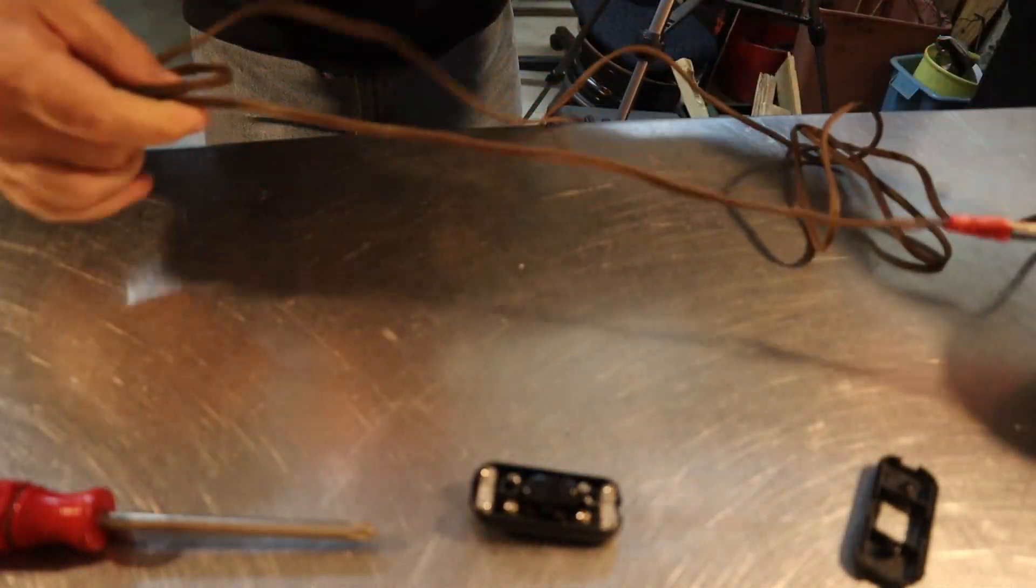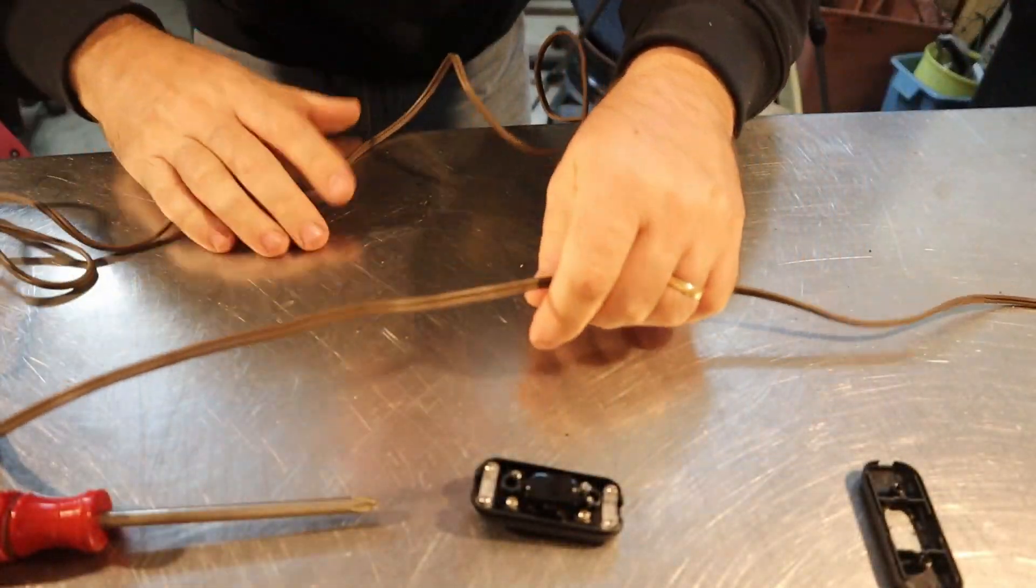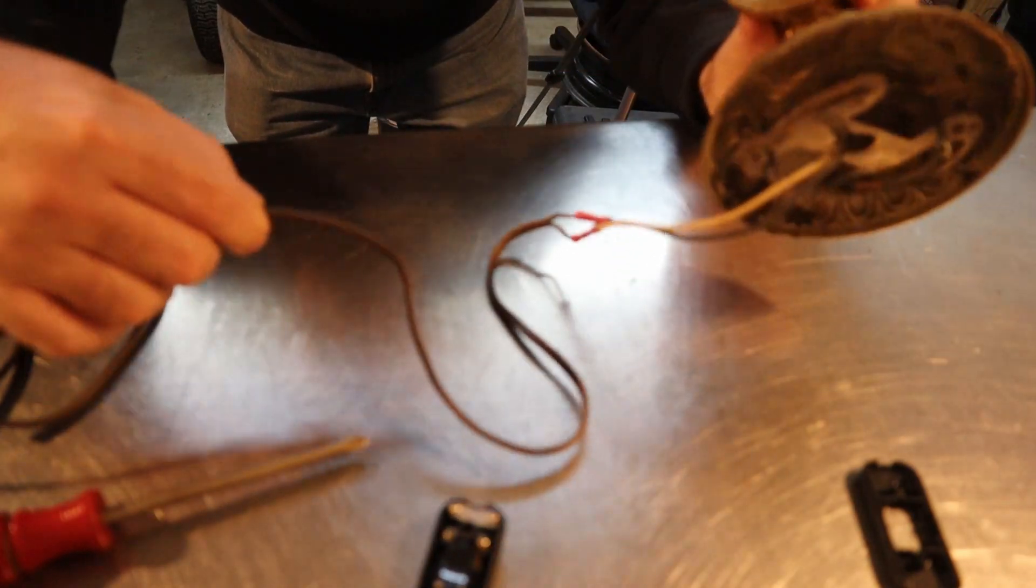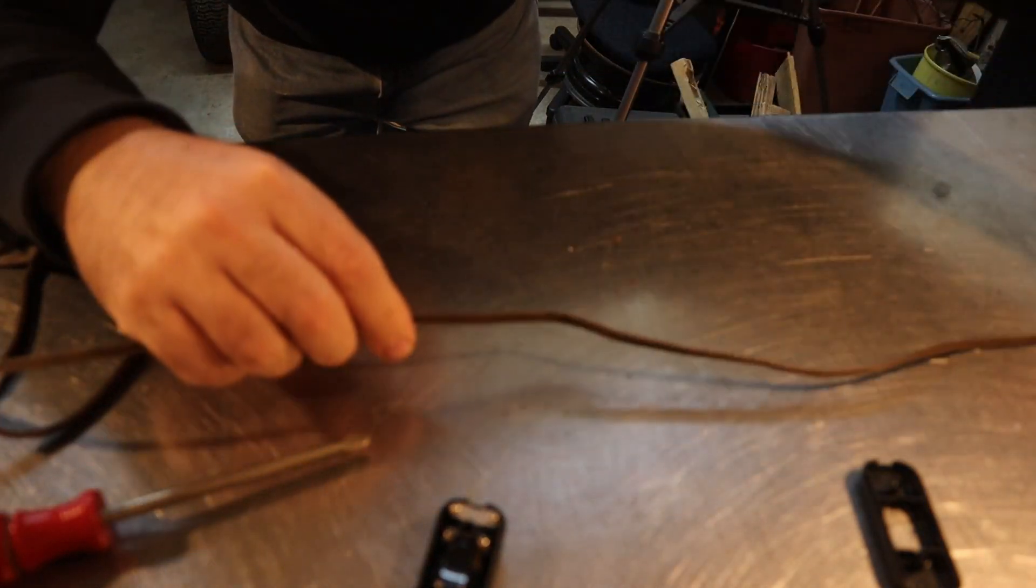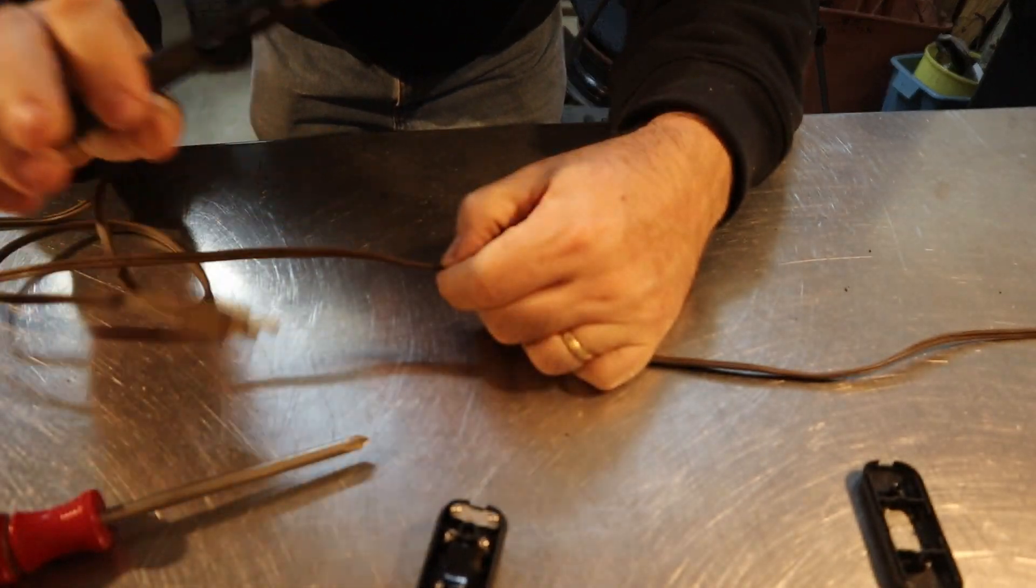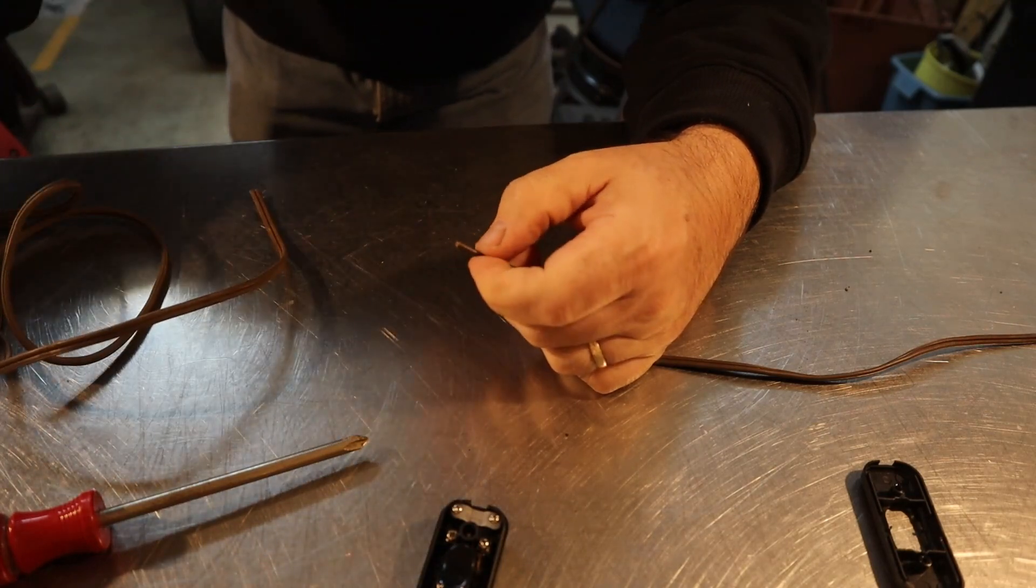Alright, so I need to determine where I want the switch to be. I'm going to have it just be a couple of feet away from the light. I don't want it too far, so I'm just going to cut it right here. Always make sure that it's unplugged when you're working on it. Alright, so we're going to cut it right here.